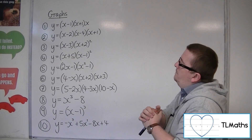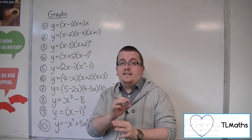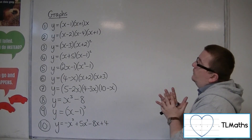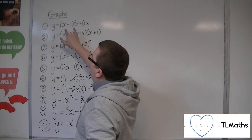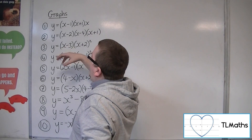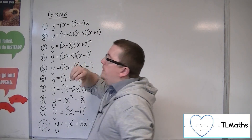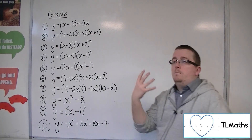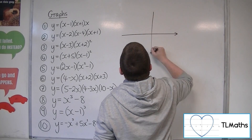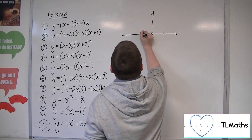So if we look at the first one, the key thing when a cubic is in factorised form is you're looking to see the factors — where is it crossing the x-axis? We've got factors of x minus 1, x plus 1, and x. So it's crossing the x-axis at 1, minus 1, and 0. These are the three values of x that will make y equal to 0. So this first one is crossing through at 0, 1, and minus 1.